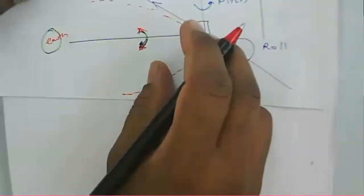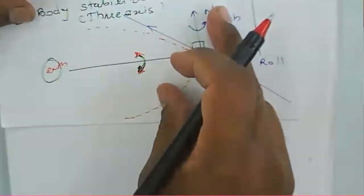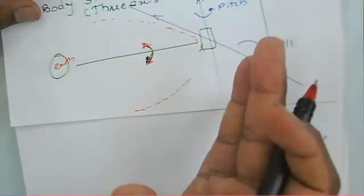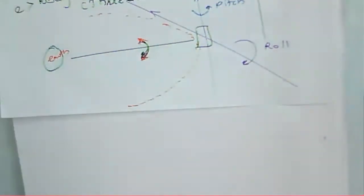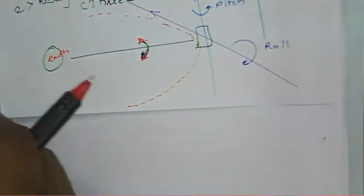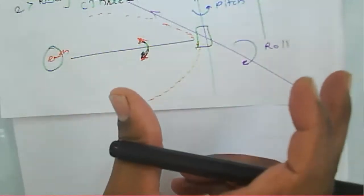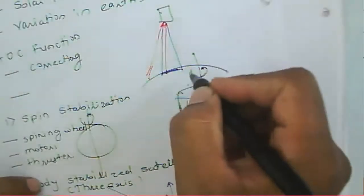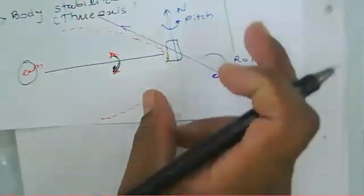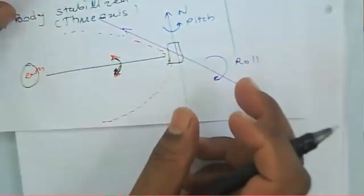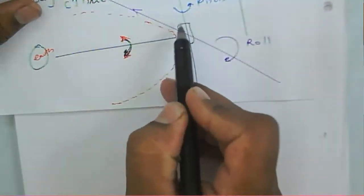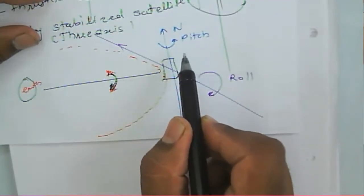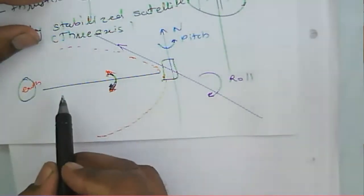Three-axis stabilized satellites are used to generate high power because they have a large number of large solar panels and large-size antennas. Due to these large solar panels and antennas, the satellite must be stabilized so it produces correct beam coverage. That's why large satellites use the three-axis stabilization technique.